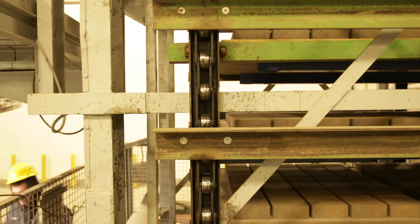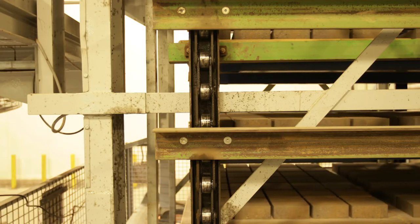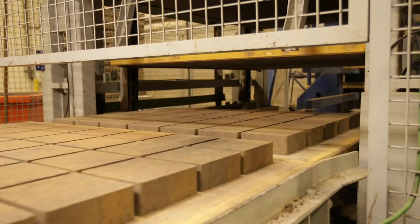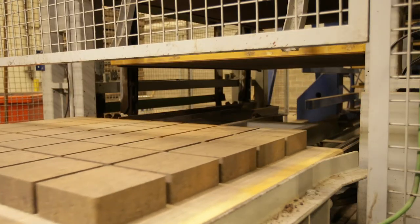Once they're cured, the finger car delivers the pallet layers onto another conveyor to be carefully inspected. Any stone that's chipped, cracked, or crumbled gets removed.